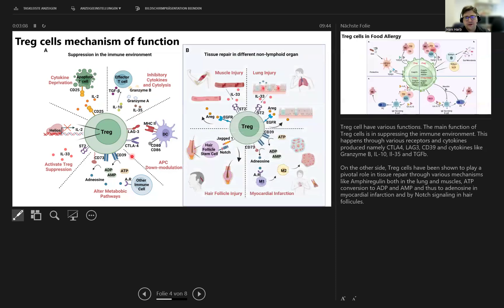On the other side, T-reg cells have been shown to play a pivotal role in tissue repair through various mechanisms like amphiregulin, for example, both in the lungs and in the muscles, ATP conversion to ADP and AMP and thus to adenosine, myocardial infarction, and Notch signaling in hair follicles.